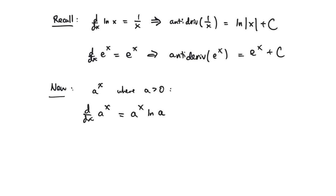In the case where a is actually equal to e, then you would be multiplying by the natural log of e which is just one, so you don't need it.